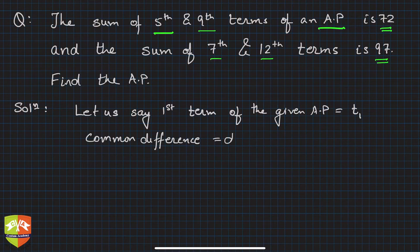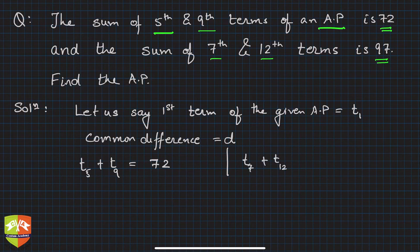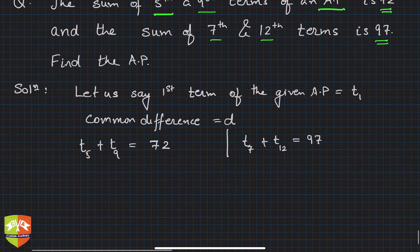Now what does the first condition say? The first condition says t5, that is fifth term, and t9, ninth term, that sum is 72. So you'll get one relationship from here. Another relationship is t7 plus t12 is 97. So with these two conditions you have to find out t1 and d.